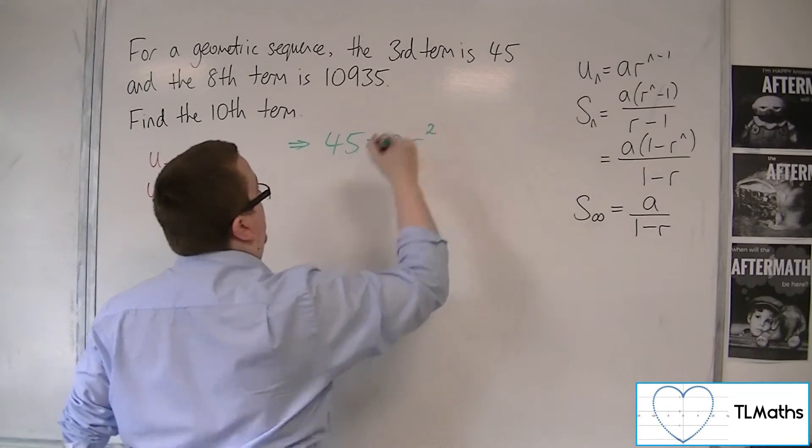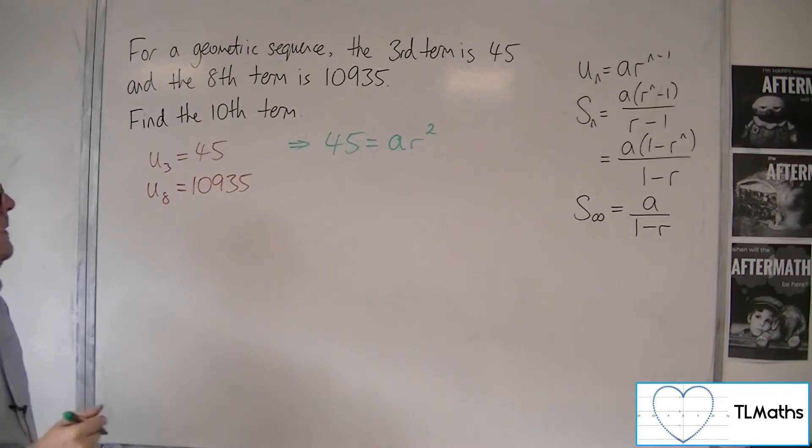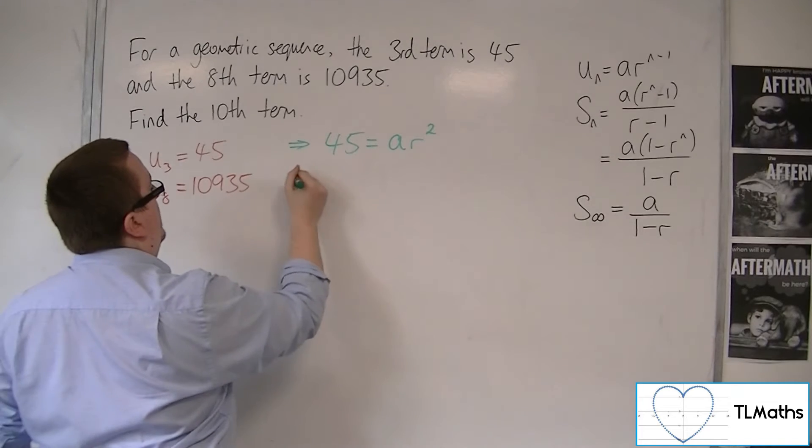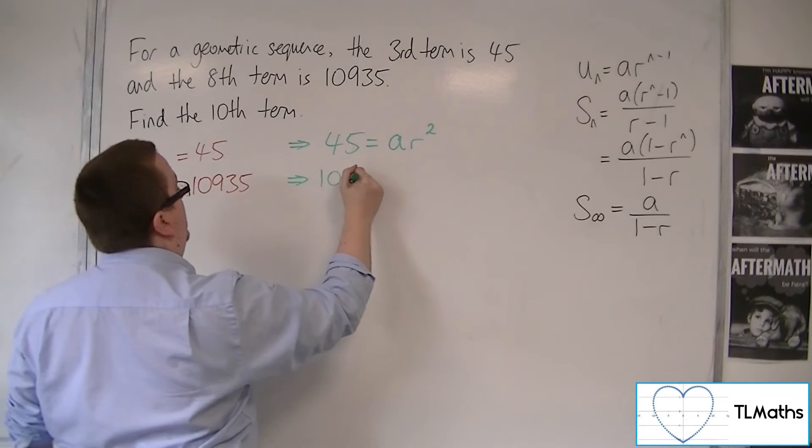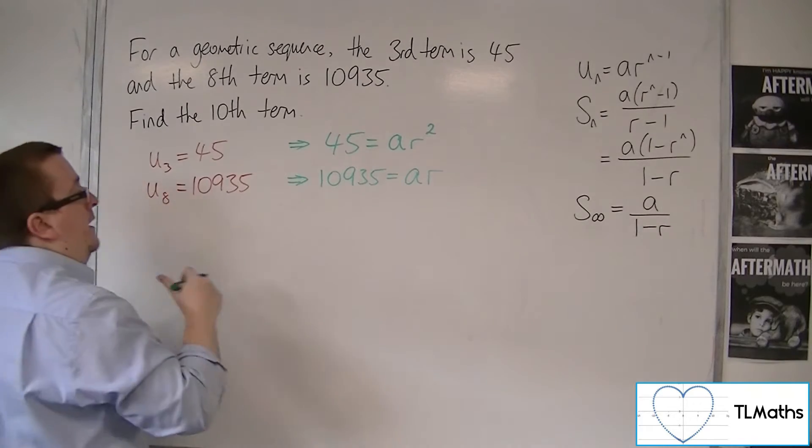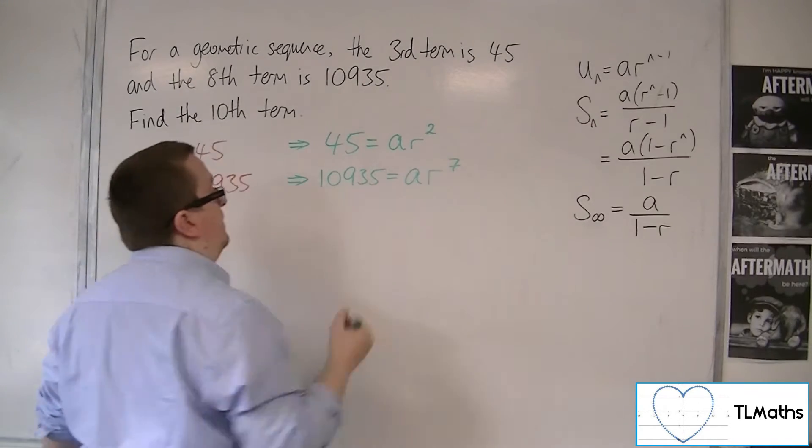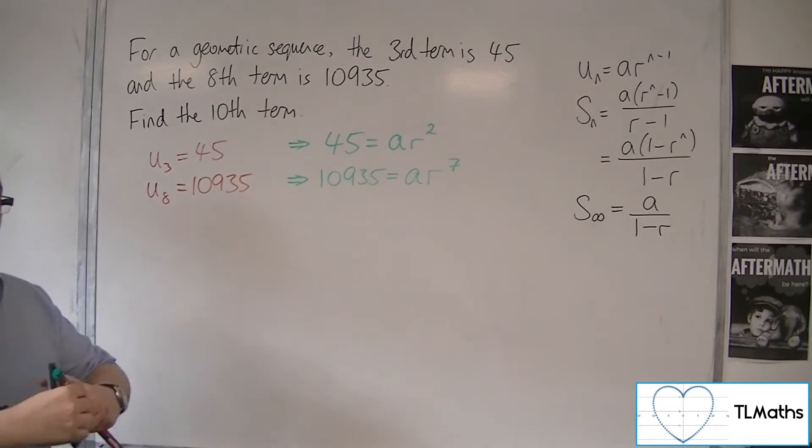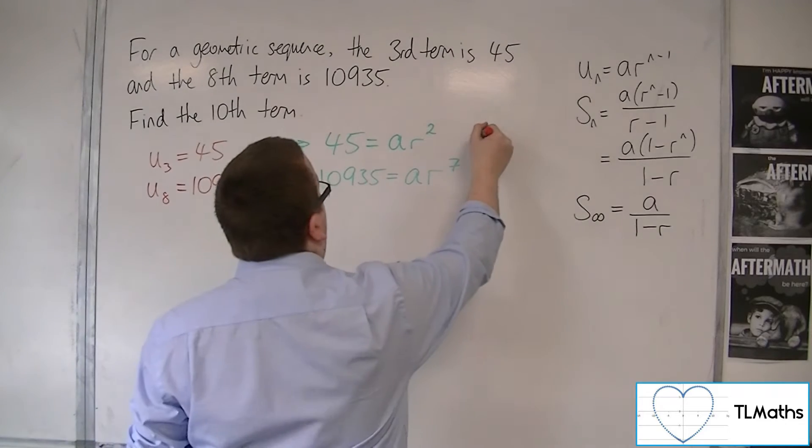And so 3 minus 1 is 2, so squared. And the second bit of information is telling me that 10,935 is equal to A times R to the n minus 1, and so that's A times R to the 7. OK, and these are the two equations that I now need to work with.